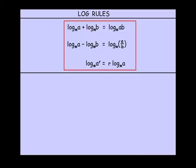And the third rule: log of A to the power of r is equal to r times log A. A good way to remember that is that that indice there, that r, just jumps out to the front.